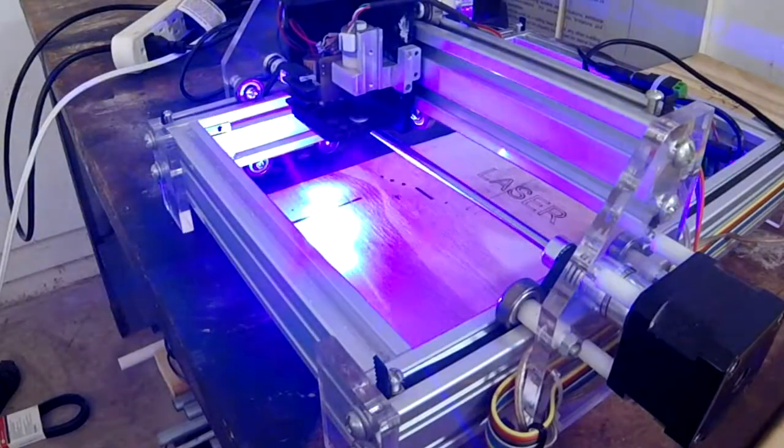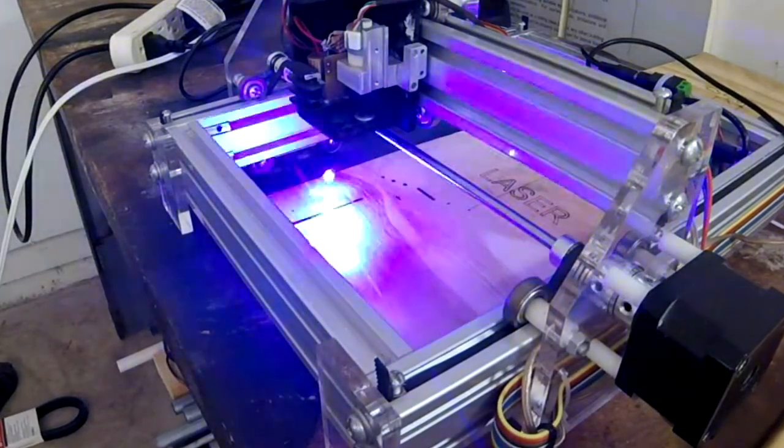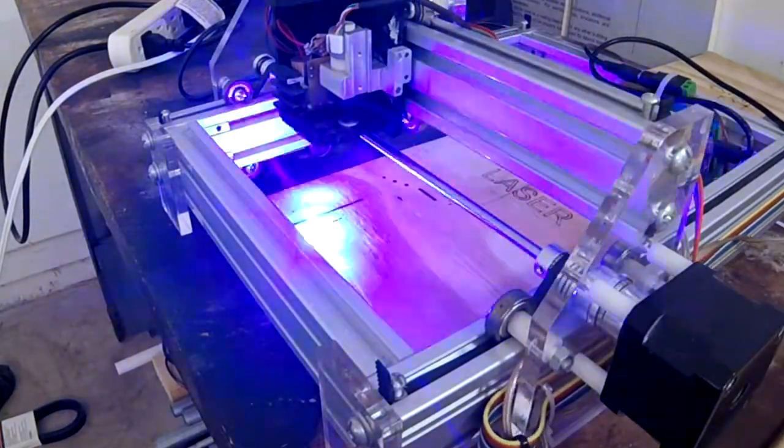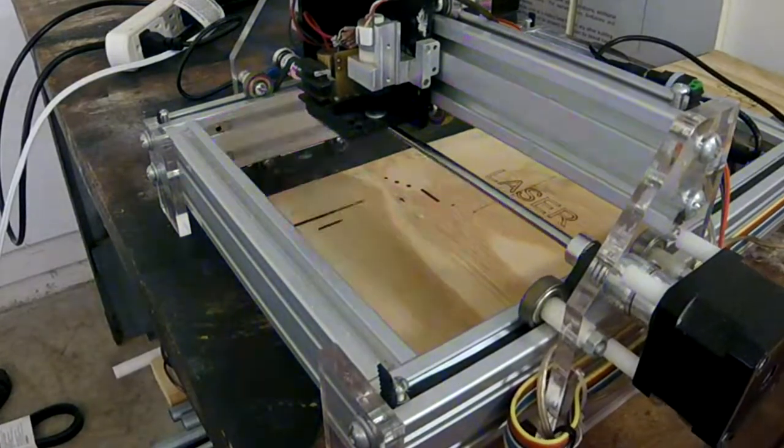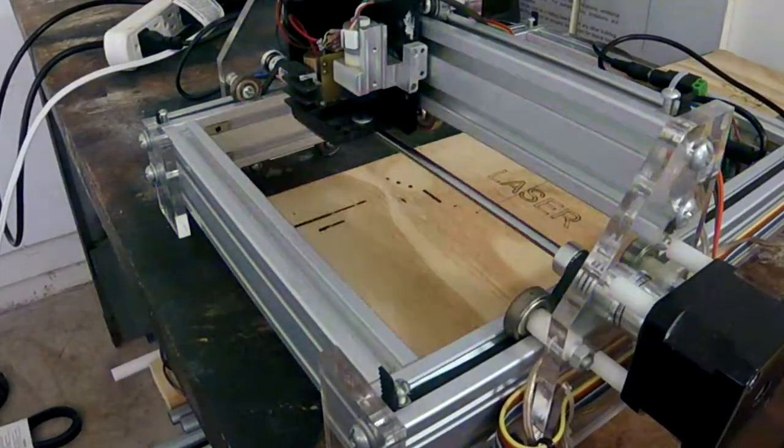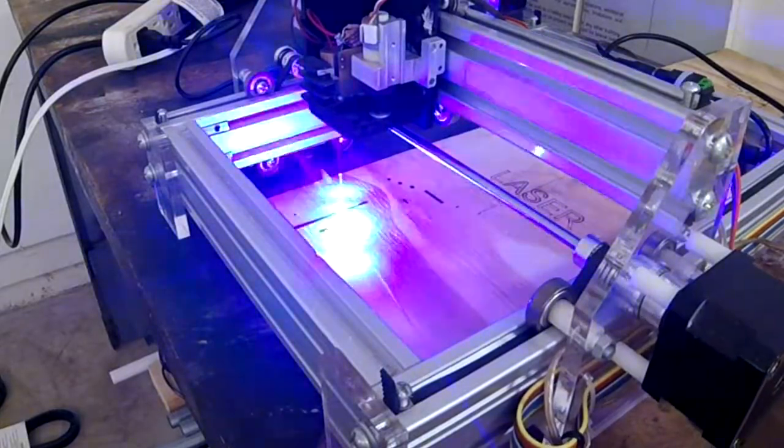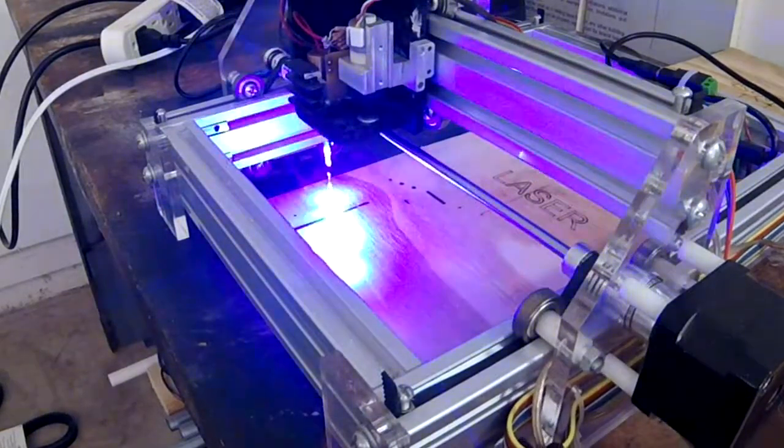So this is one thing I worked on a long time ago, something called pixel machining. And instead of using like a typical CAD CAM process, it just takes a bitmap image and then puts a dot down for every bitmap. It's kind of a one to one type ratio.